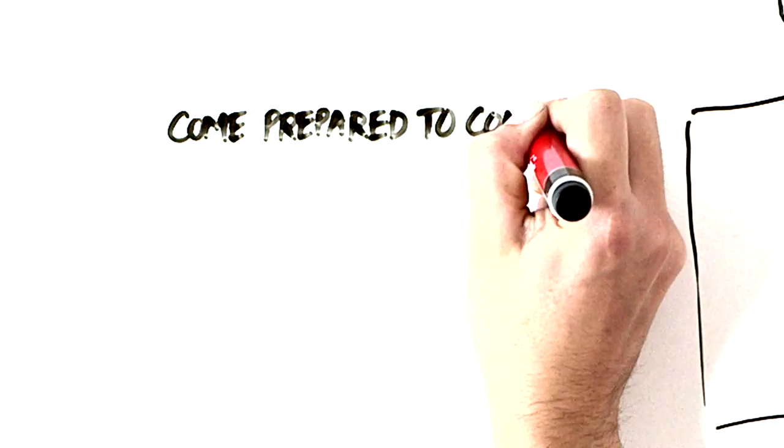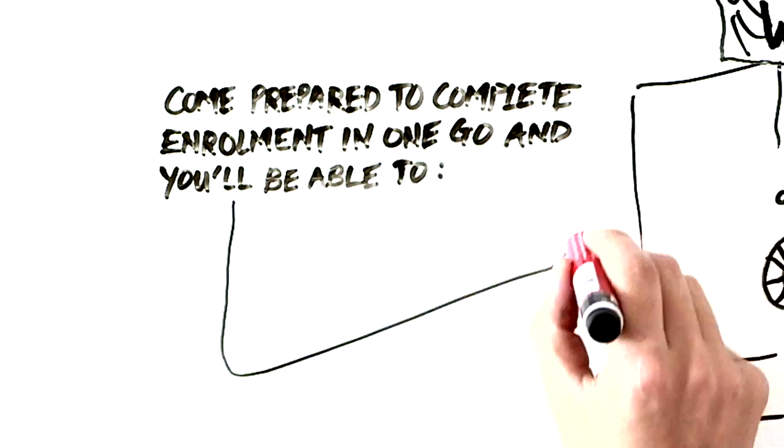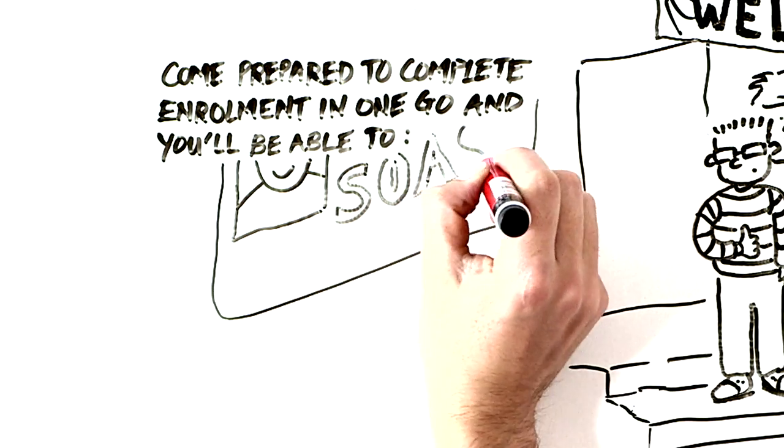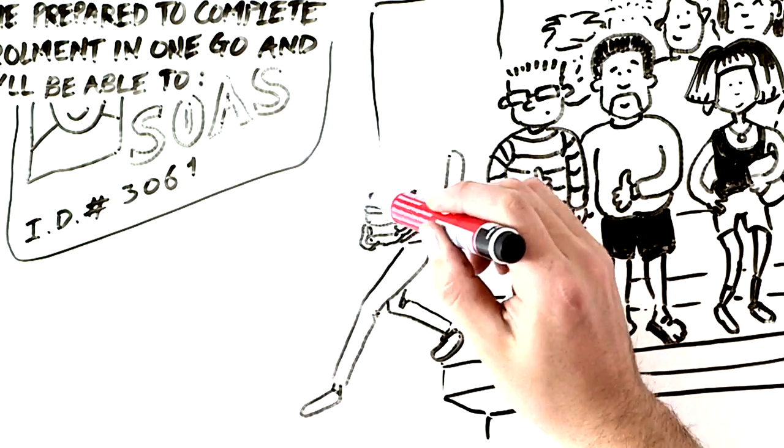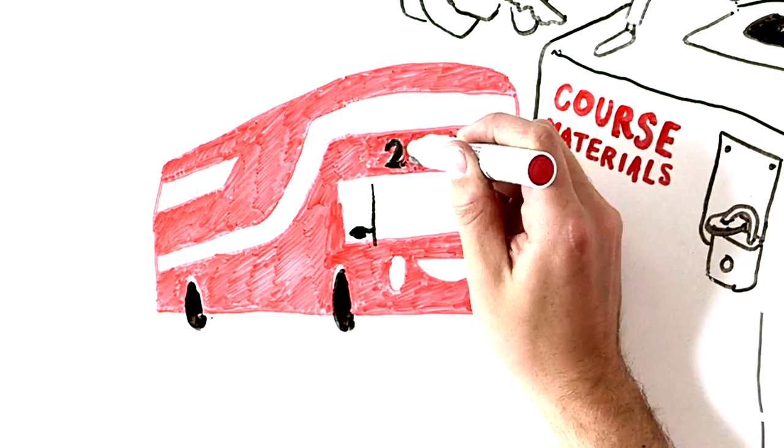You'll find it really beneficial if you can come prepared to complete enrollment in one go, because you'll be able to obtain your SOAS ID card, borrow books from the library, access the course materials you need for your classes, and make applications for student discounted travel if you're eligible.